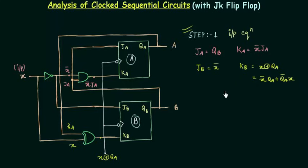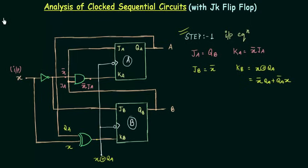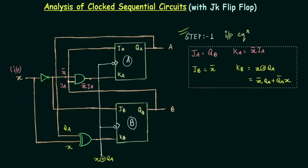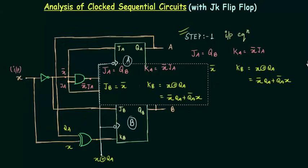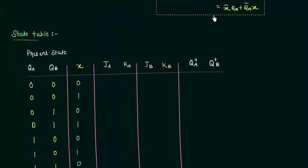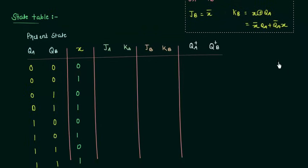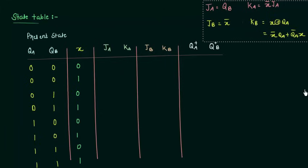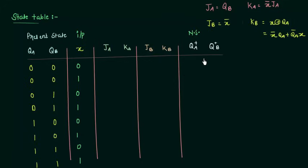Now we will use these expressions to find out our state table, and finally by using the state table we will have our state diagram. I will copy these expressions and paste them near my state table and use these equations to fill it. I have already made the state table to save some time. The present state is QA QB, X is my input, and QA+ QB+ is my next state. So let's find out the next state using the characteristic table of the JK flip-flop. For that we have to find out the values of JA, KA, JB, and KB.